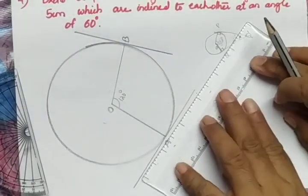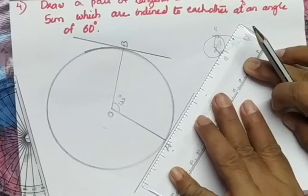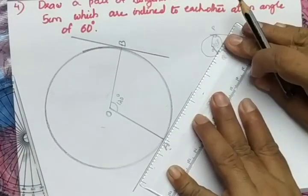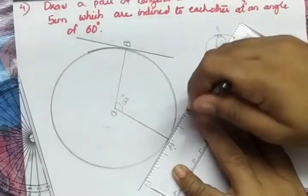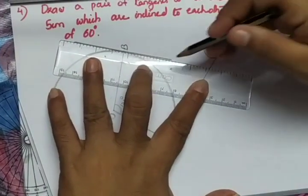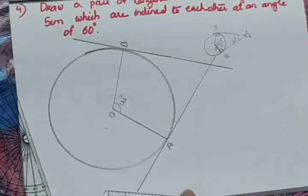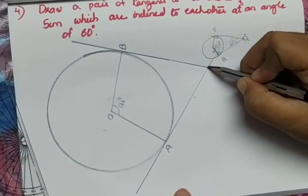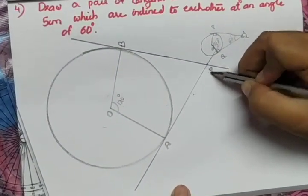What to do next is, extend the line. Same way, extend this line also. And these 2 lines intersect at a point. That point will be the external point B.